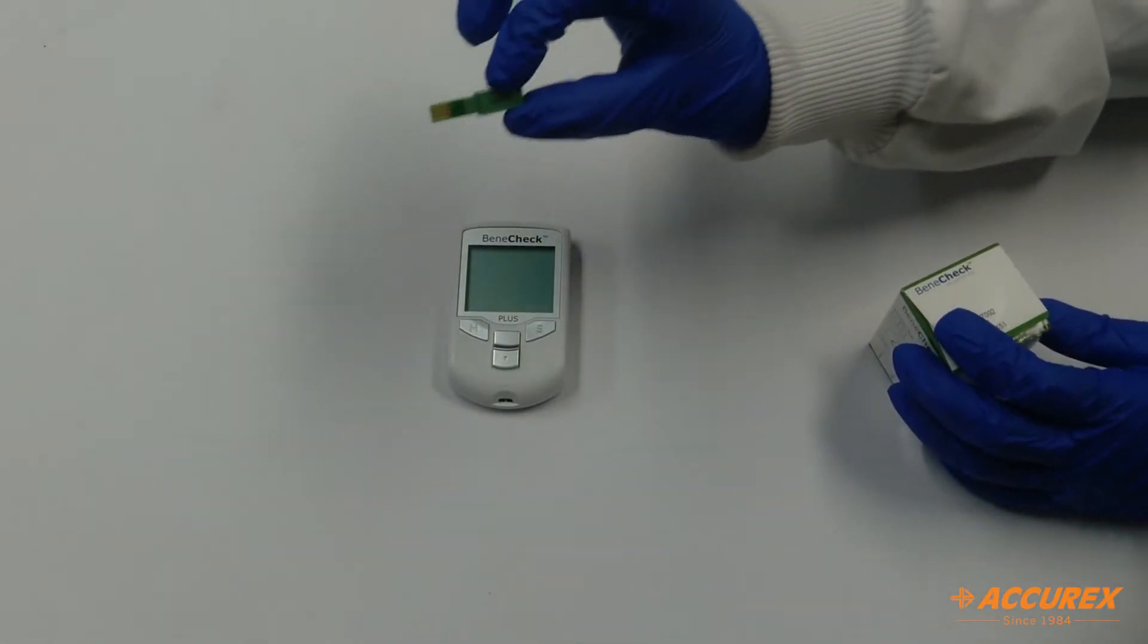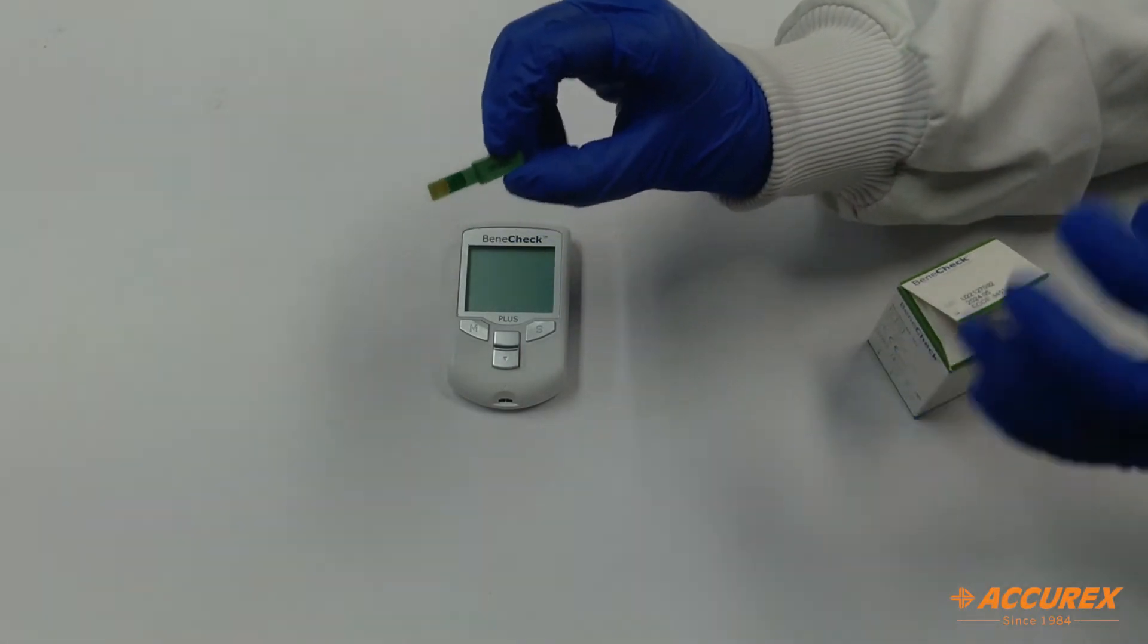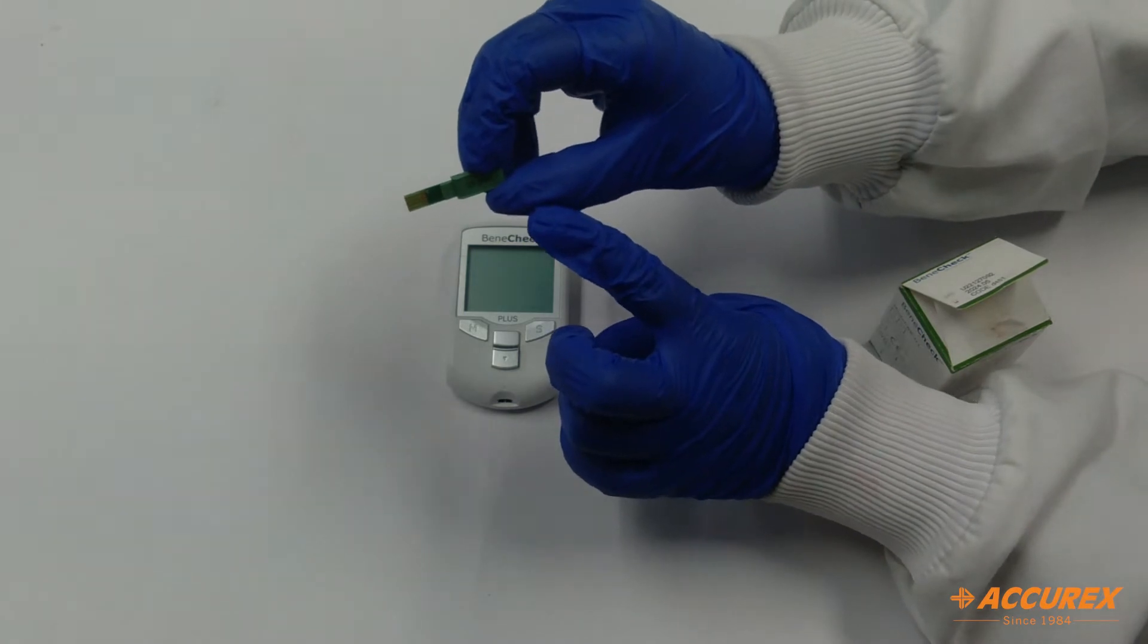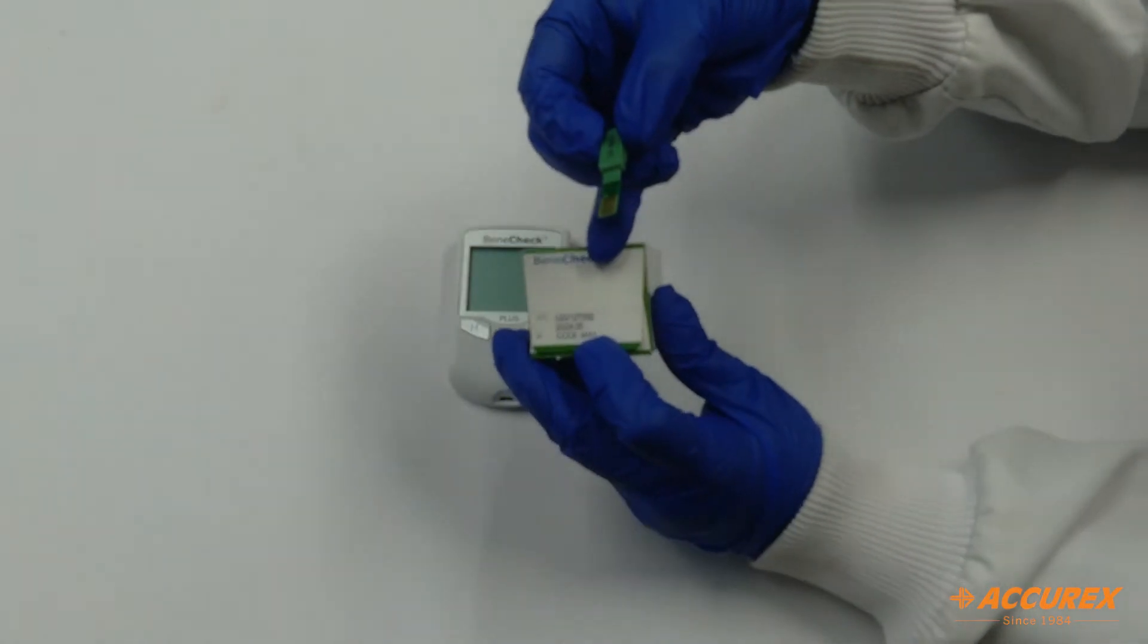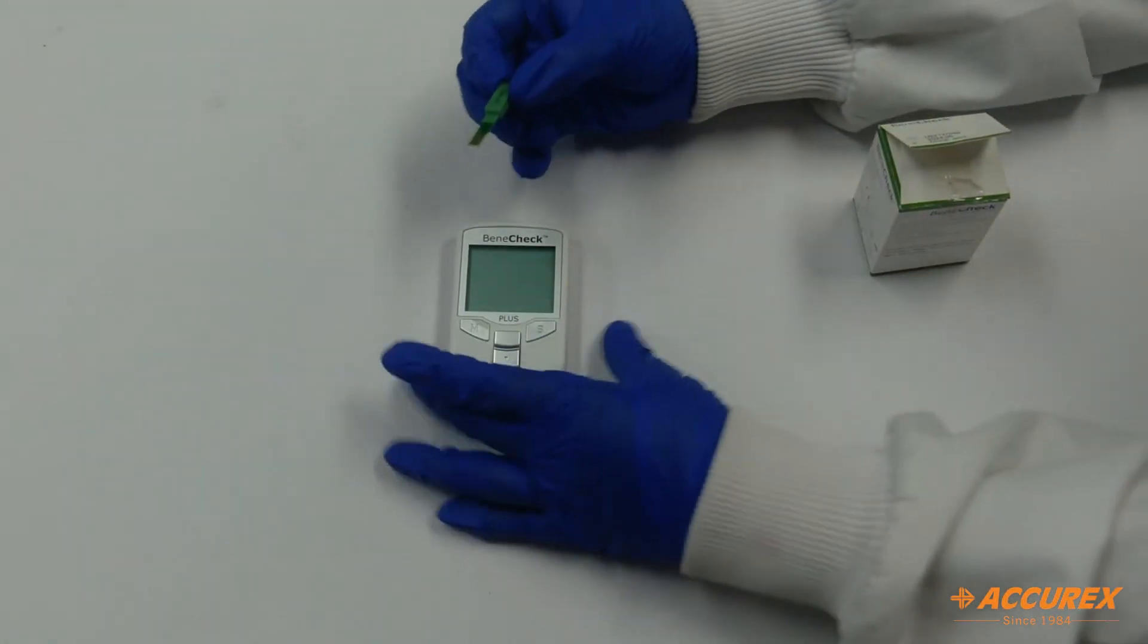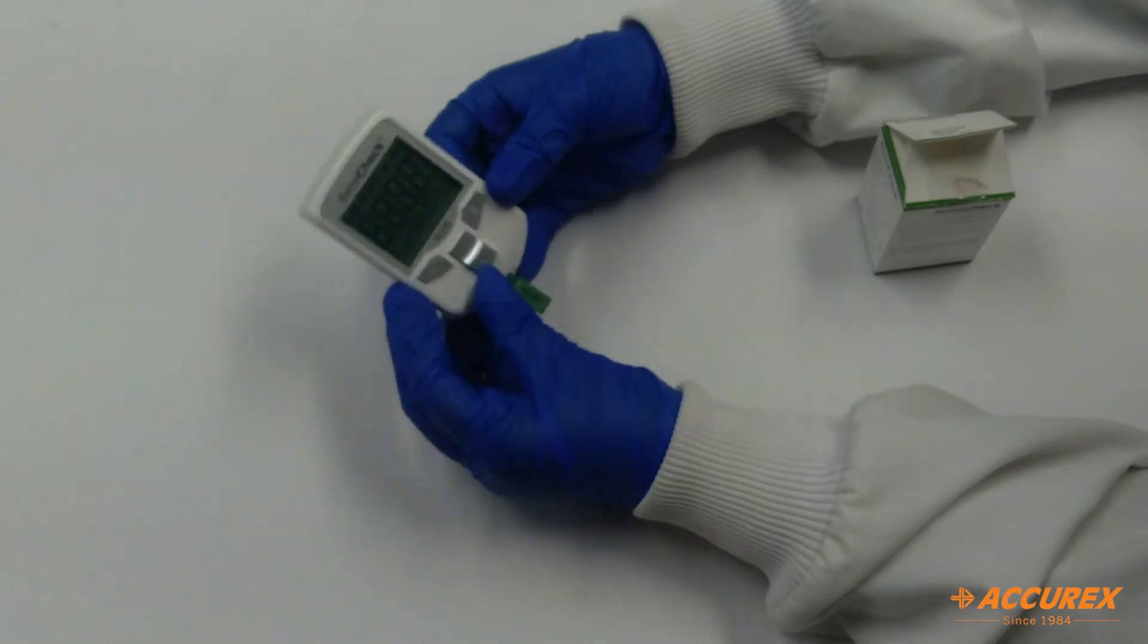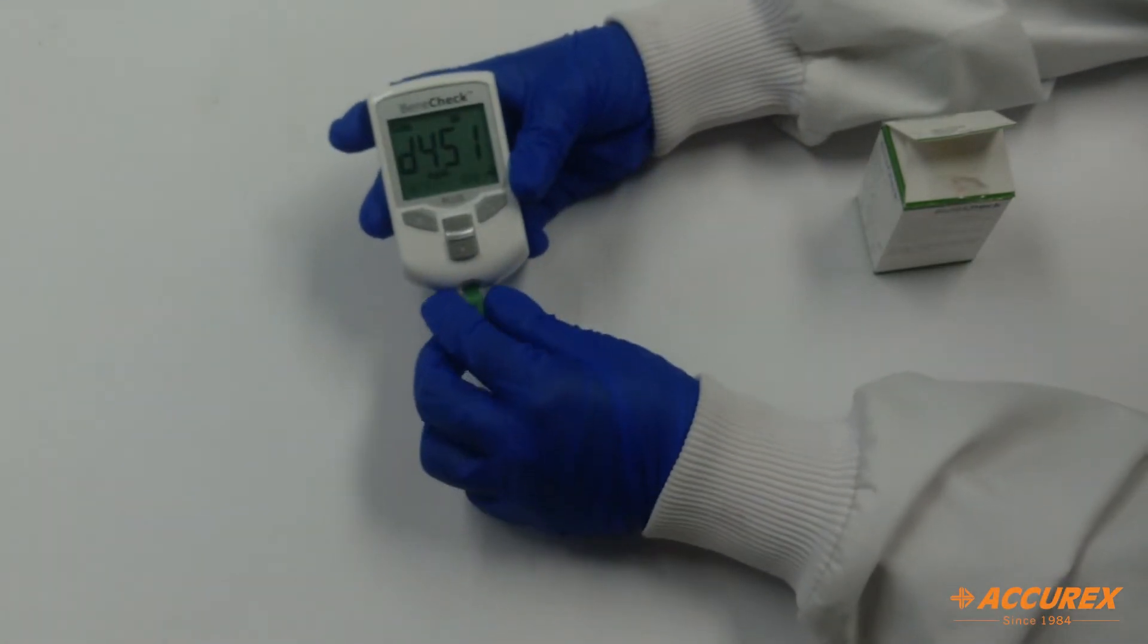First we need to insert this code chip. This code chip comes with the strips and the code number given over here, D451, should be equal to the code number given on this strip. For this code chip only this strip will work. We will insert the code chip in this meter like this and the code number will be shown over here and then we will remove it.